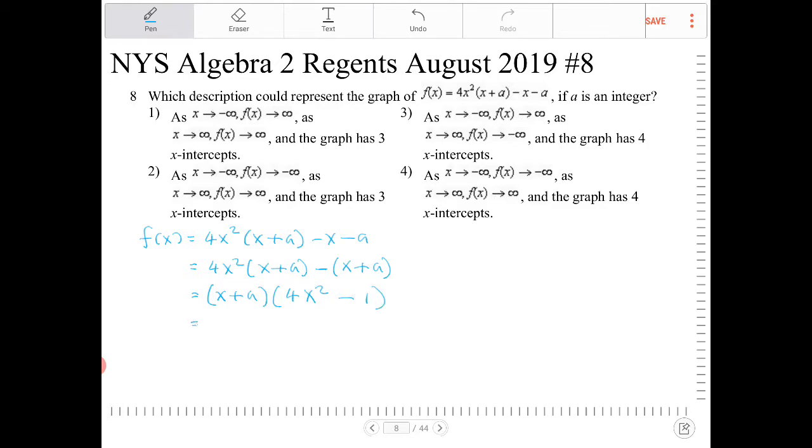4x squared minus 1 is a difference of squares. I can factor that even further. So I have x plus a times 2x plus 1 times 2x minus 1.